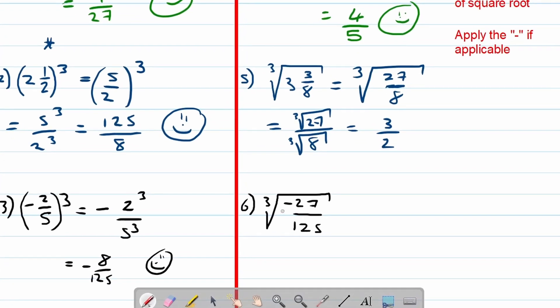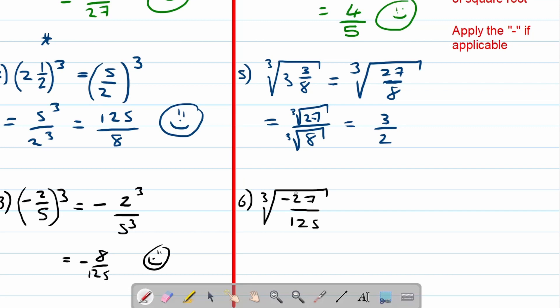Then our last example over here is a negative underneath the cube root. Now this is not a problem. As you can see here, we are not saying be aware of the negative, we are saying apply the negative if applicable. Now it is applicable, so over here we can then just write it down: it is a negative, it becomes a negative, and then the cube root of 27 over the cube root of 125, which then will become negative 3 over 5. There we go. Thank you for your time.